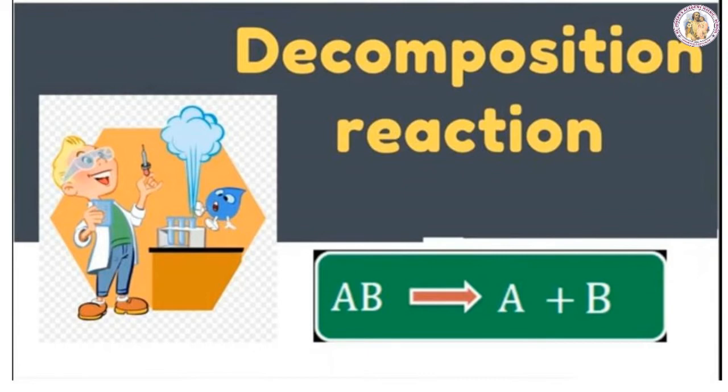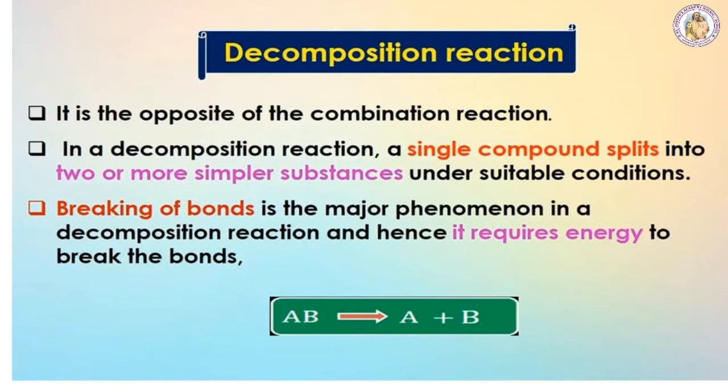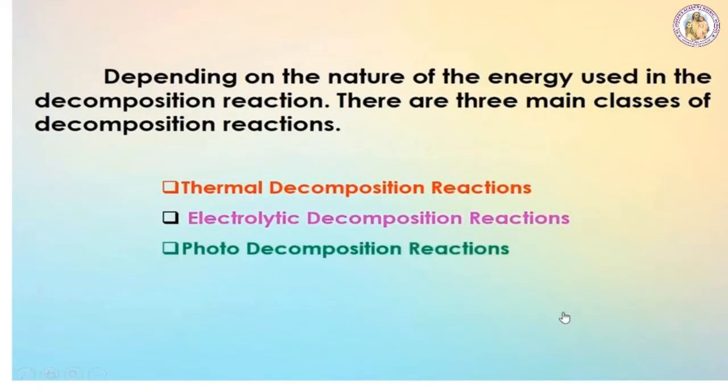Decomposition reaction: the word decomposition itself tells you it will break apart. AB → A + B. It is opposite to the combination reaction — it splits one compound into two or more simpler compounds under suitable conditions. Bond breaking is the major phenomenon in decomposition reactions, which requires energy. Depending on the nature of the energy used, decomposition reactions are classified into three types: thermal decomposition, electrolytic decomposition, and photodecomposition reaction.